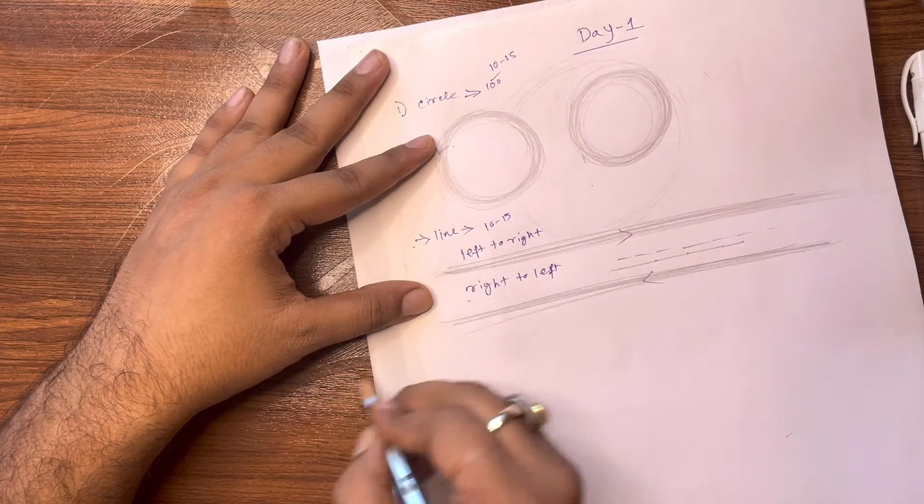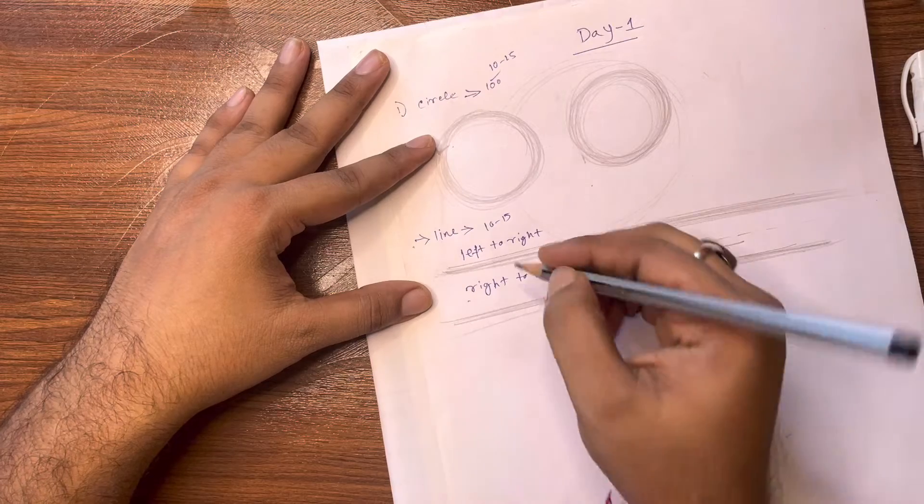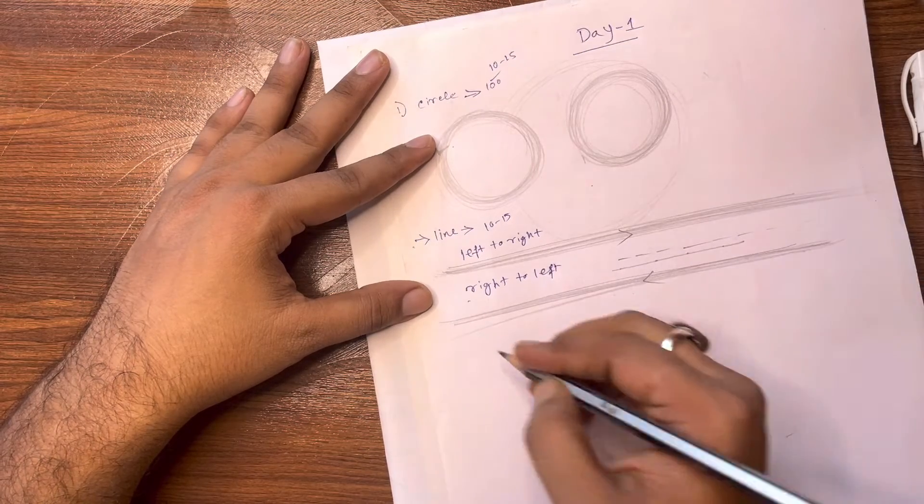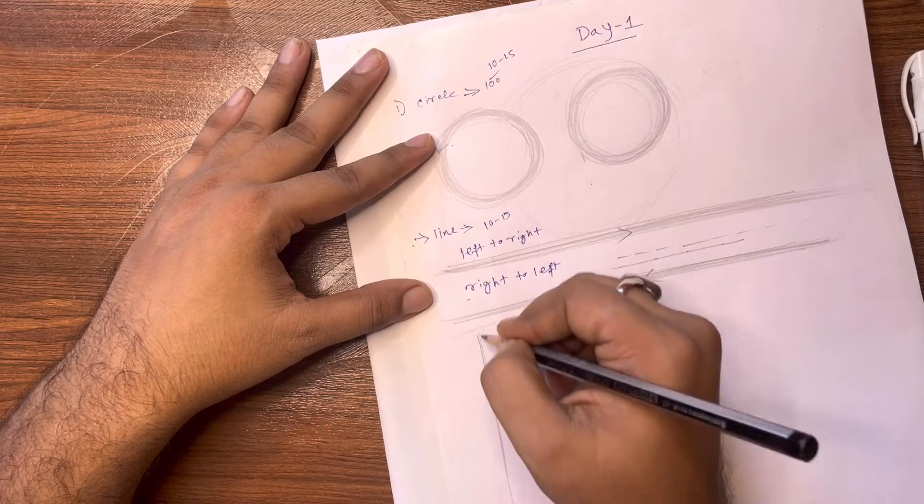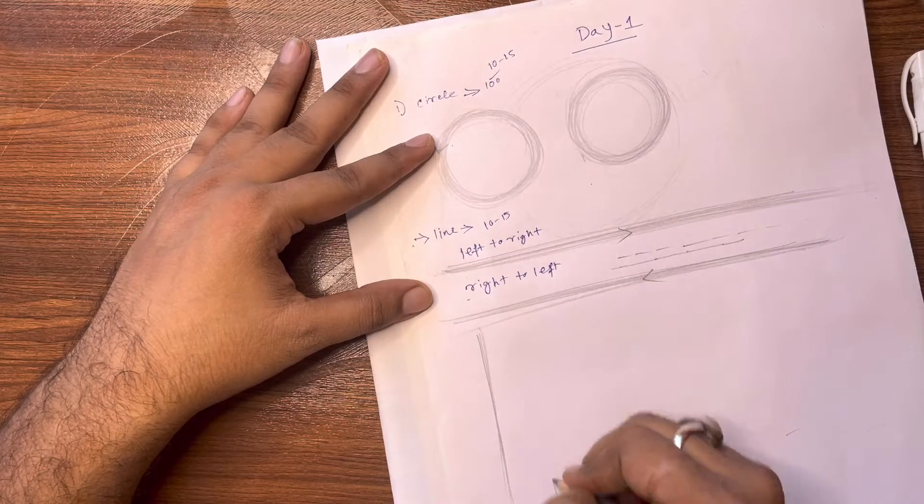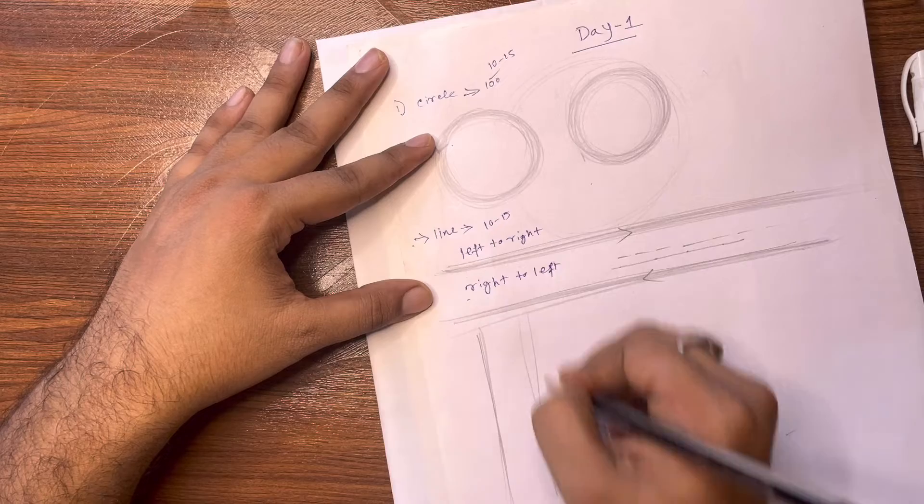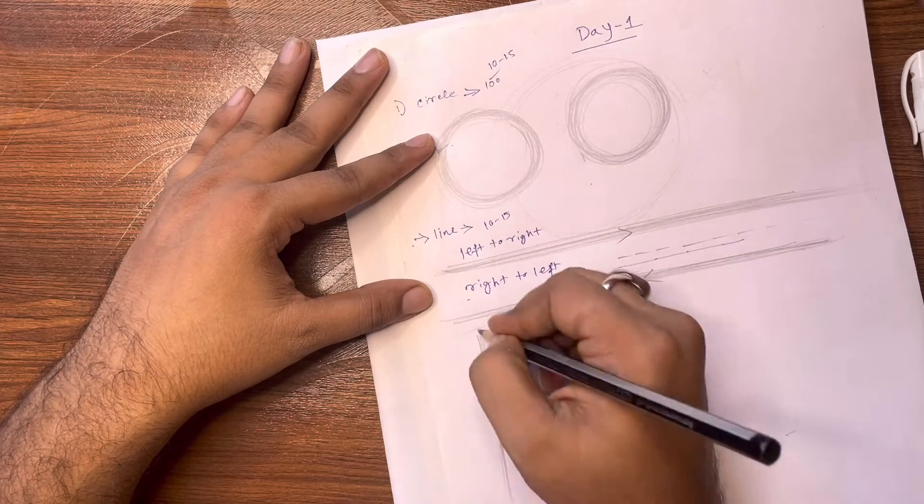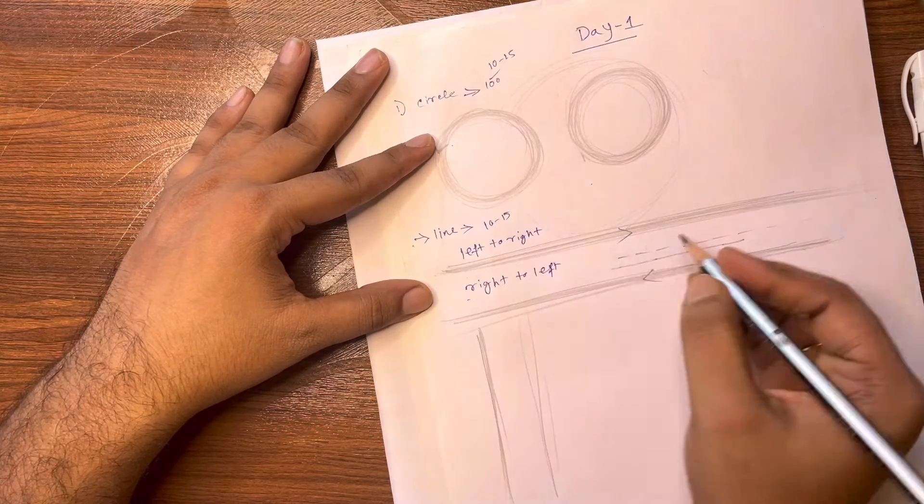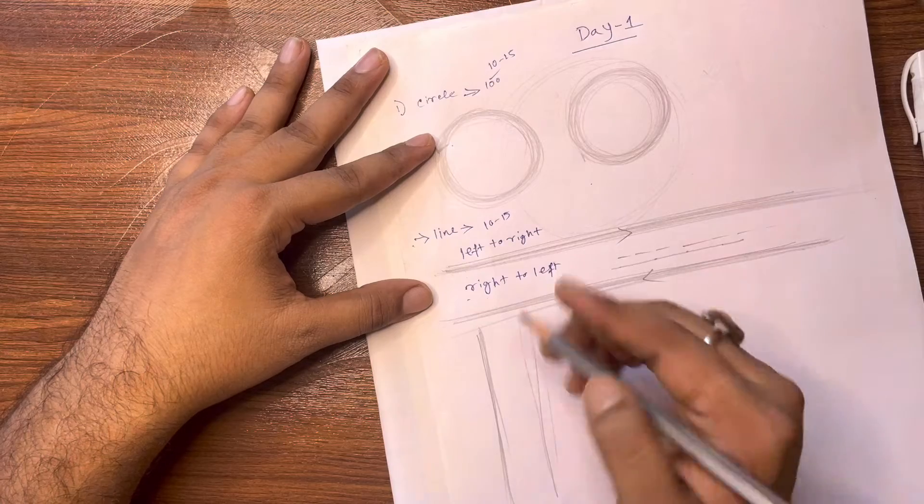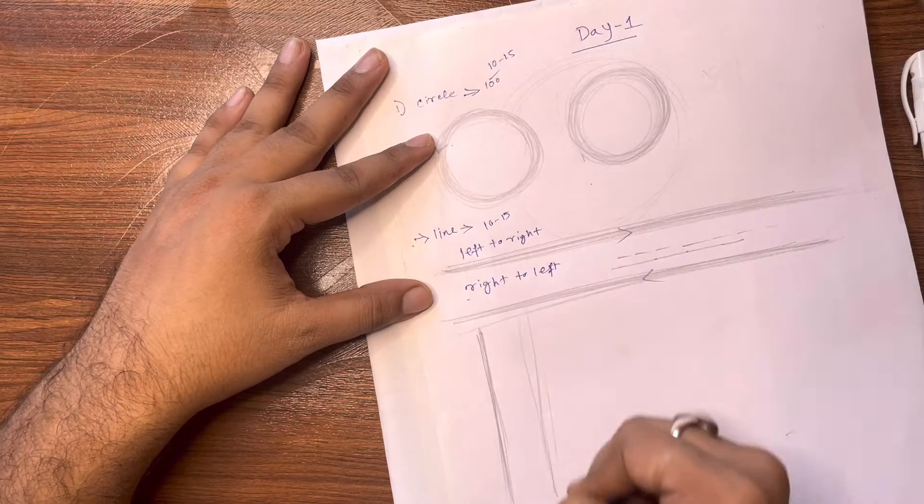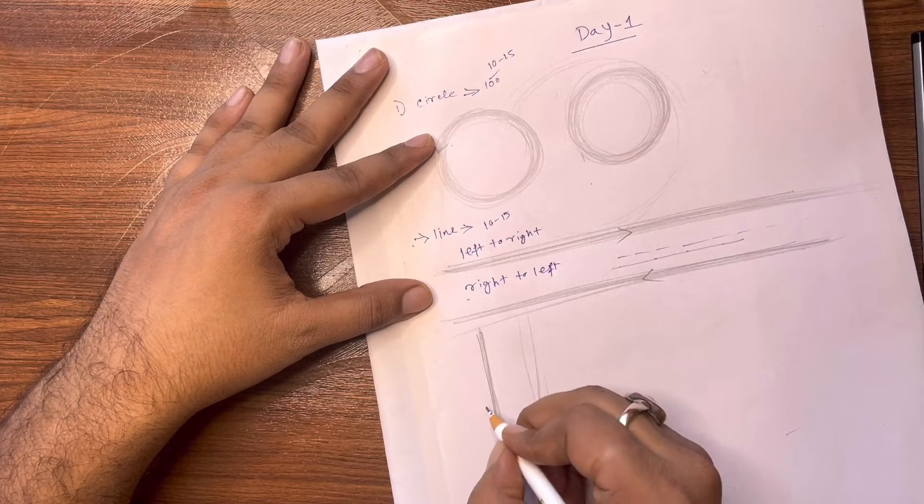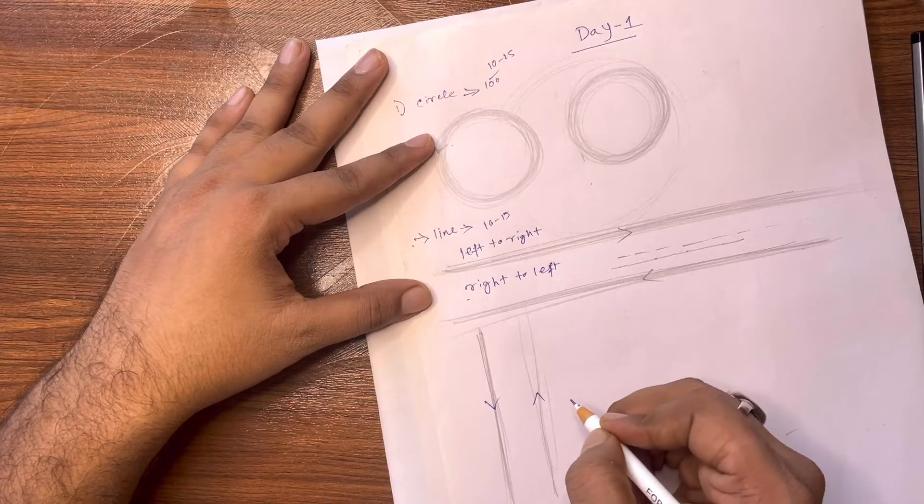One left to right, one right to left. This is how the line goes up to down. Now down to up. This is the process: left to right, right to left, up to down, then down to up.